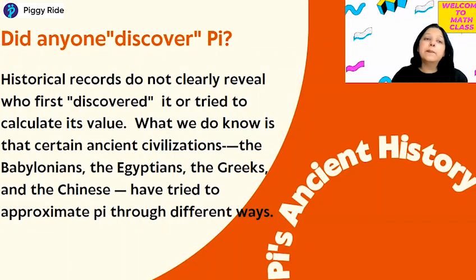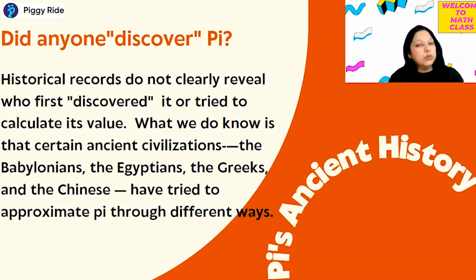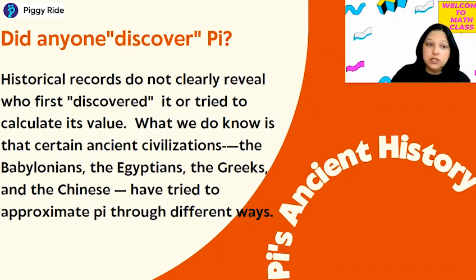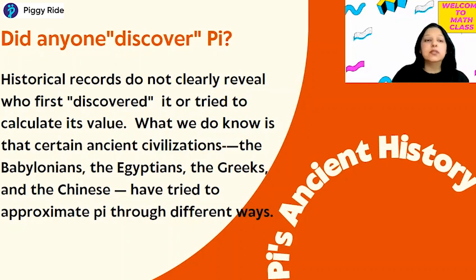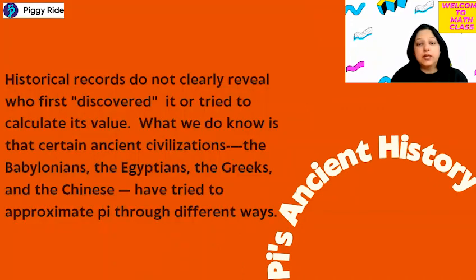Did anyone discover pi? Where did it come from? Historical records do not clearly reveal who discovered it first, but we know that some ancient civilizations — the Babylonians, the Egyptians, the Greeks, and the Chinese — all tried to approximate pi through different ways.